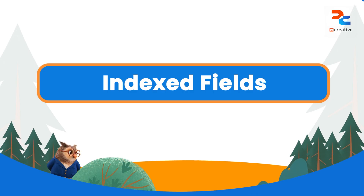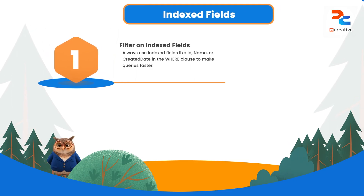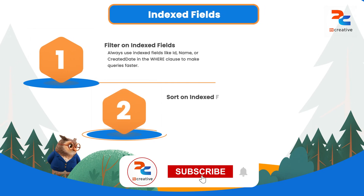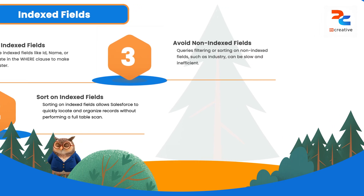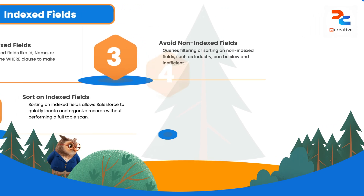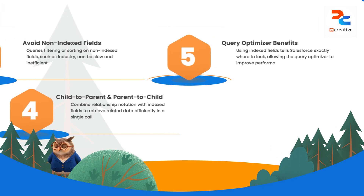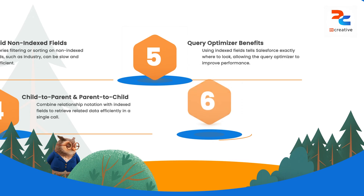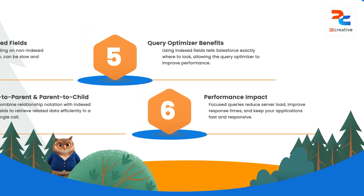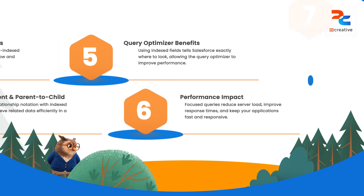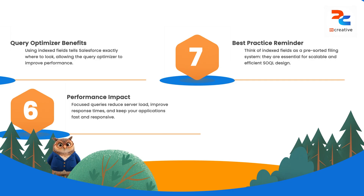The next best practice is to filter and sort on indexed fields. Filtering and sorting should always be done on indexed fields like ID, Name, or Created Date, as this makes queries faster. Think of indexed fields as a pre-sorted filing system for your database. Without an index, Salesforce has to perform a slow full table scan. A query filtering on a non-indexed field like 'Industry' and sorting by 'Created Date' is slow, but a query using an indexed field like ID in the WHERE clause and Name in the ORDER BY clause is significantly faster. By focusing on indexed fields, you tell Salesforce exactly where to look, keeping your application responsive and efficient.